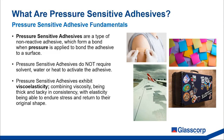Pressure sensitive adhesives exhibit a property known as viscoelasticity — being thick and tacky in consistency while also being elastic, or able to withstand stress and return to their original shape. Pressure sensitive adhesives have an endless number of applications and are used in many different industries, from construction, glazing, electronics, manufacturing, packaging, signage, aviation, healthcare, and more.